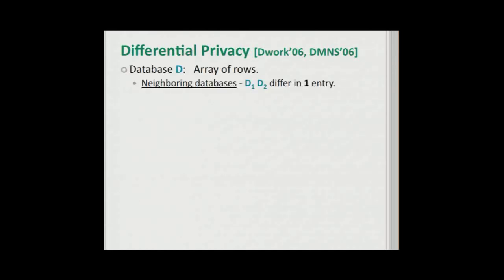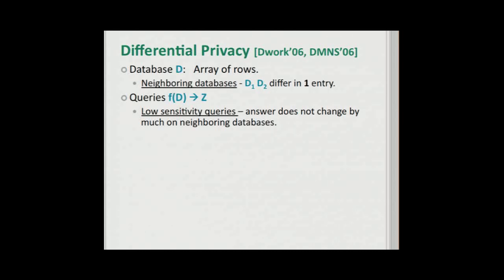In differential privacy, we consider databases which we model as arrays of rows. We say that two databases D1 and D2 are neighboring if they differ in one entry. We also care about queries — these are functions that take as input the database and give us an output. For the purpose of this talk, I'm going to assume that this output is an integer, and let's limit ourselves to low-sensitivity queries.